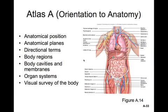Now let's explore Atlas A. In Atlas A we're going to cover general anatomical terminology, the various body regions, the body cavities and their membranes, as well as a brief survey of the organ systems that you'll explore through the next two semesters. Atlas A also includes a visual survey of the body with many different colored plates of muscles, nerves, veins and arteries. I'm not going to include them in this presentation, but do spend some time looking through Atlas A in your text.